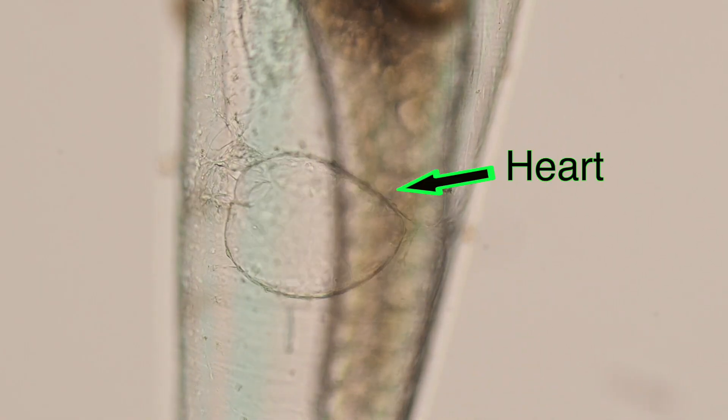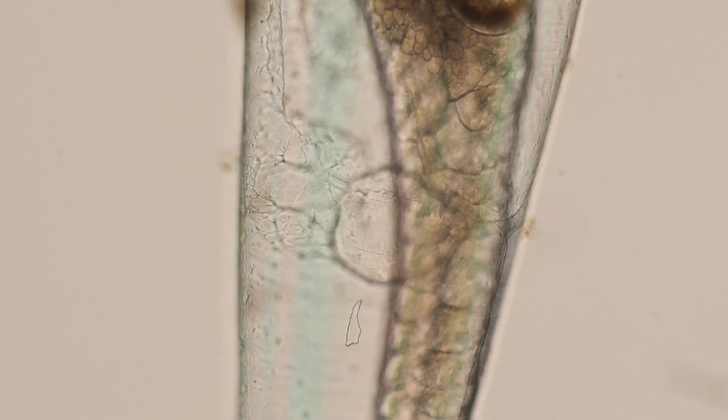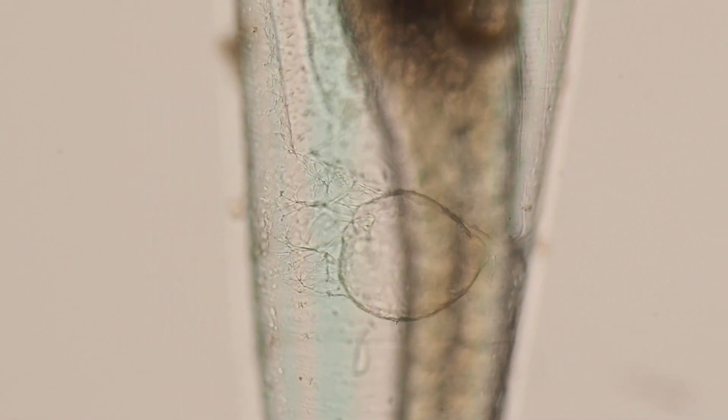If we look closer we can see its heart beating at a really fast heart rate. Their shells are made of calcium carbonate, and this makes them vulnerable to ocean acidification.